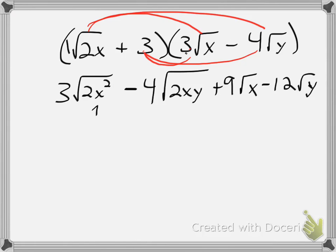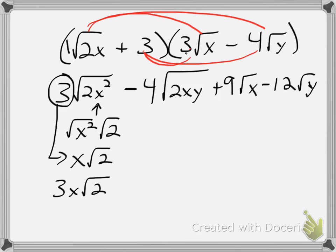I can, however, break down this x squared. So I'll split my radical into the square root of x squared times the square root of 2. That becomes x square root of 2. Now since I have my 3 outside, I'm going to bring it down and multiply. So now I have 3x, 3 times x, square root of 2.